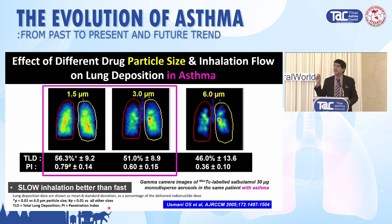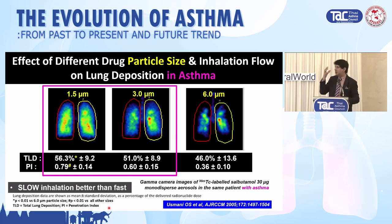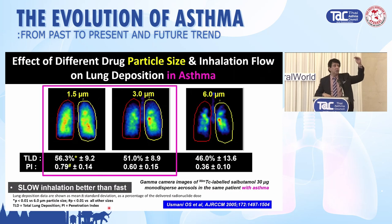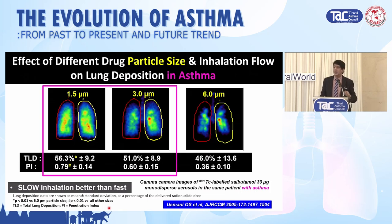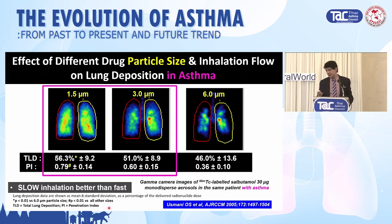The penetration index (PI) tells you how much the aerosol penetrates in the lung — the higher the ratio to one, the greater the degree of penetration. With 1.5 micron small particle extra fine, PI is 0.79. Now look at large particles on the right-hand side.